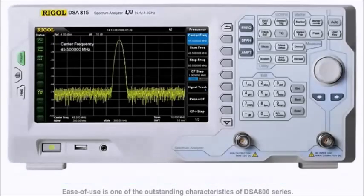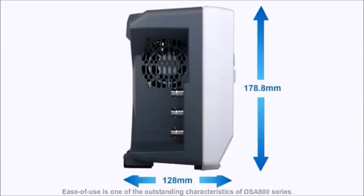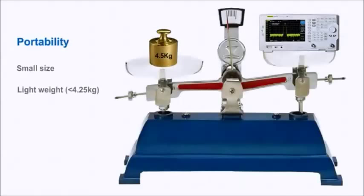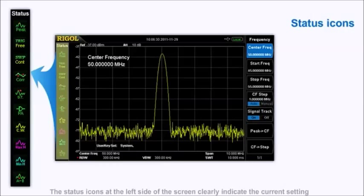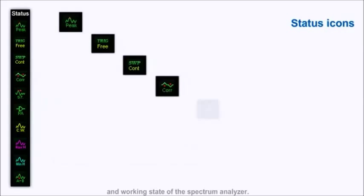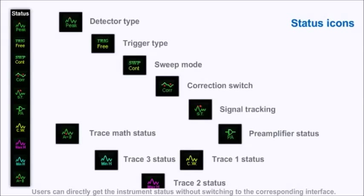Ease of use is one of the outstanding characteristics of the DSA800 series. Its small size and lightweight also ensure good portability. The status icons at the left side of the screen clearly indicate the current setting and working state of the spectrum analyzer. Users can directly get the instrument status without switching to the corresponding interface.